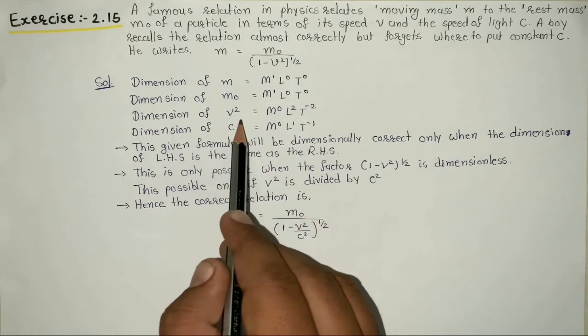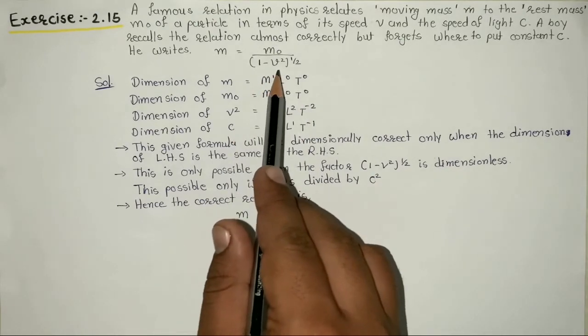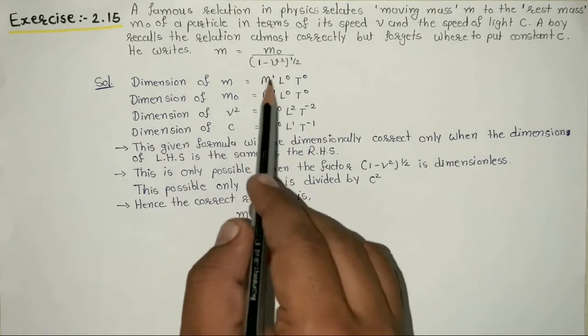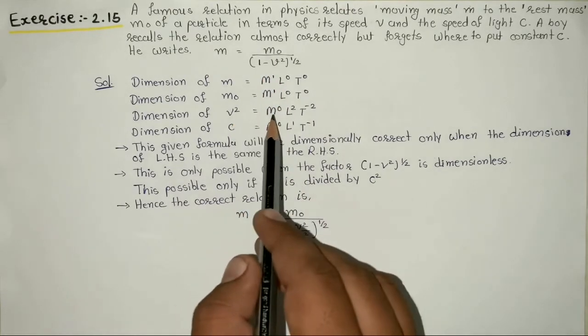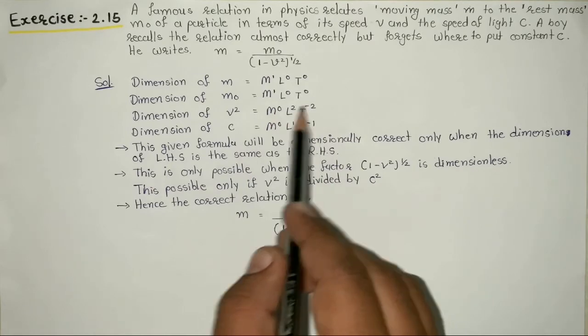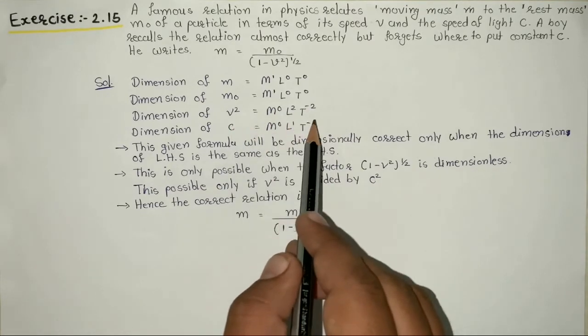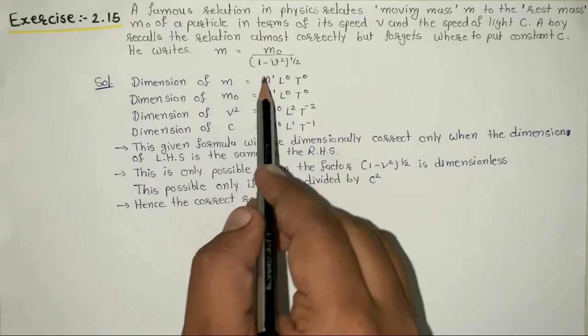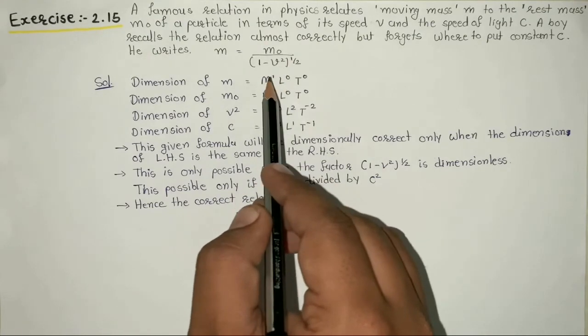v square divided by c square means v square has dimension M⁰L²T⁻² and c square also has dimension M⁰L²T⁻², so these dimensions cancel out.